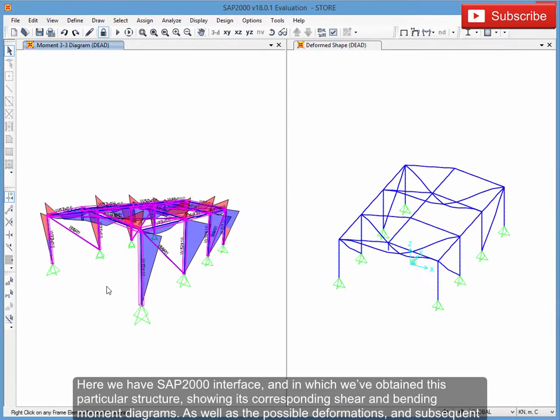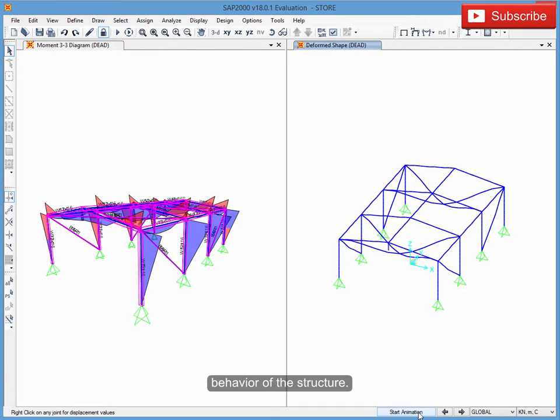Let's see. Here we have the SAP 2000 interface, in which we've obtained this particular structure showing its corresponding shear and bending moment diagrams, as well as the possible deformations and subsequent behavior of the structure.